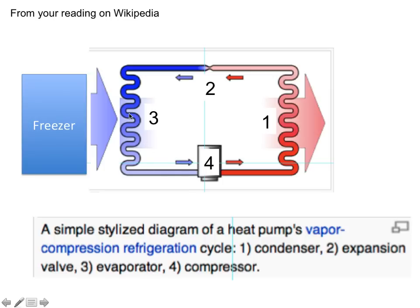What actually happens is you use a working fluid that evaporates and condenses. The very compressed gas condenses, and you lose the whole heat of vaporization — which is an enormous amount of energy — ending up with a liquid under high pressure. Then at the expansion valve, it evaporates and the fluid absorbs the heat of vaporization, which is a huge amount of energy. As that gaseous fluid goes through the freezer, it gets heated up and then compressed again.